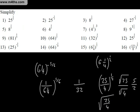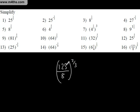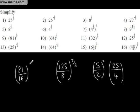Let's look at 125 over 8 to the 2 over 3 power. We need to take the cube root of both. The cube root of 125 is 5. The cube root of 8 is 2. We now need to square these. So we're going to be left with 25 over 4.